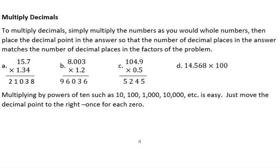Let's look at our examples and see if we can place the decimal points correctly. 15.7 times 1.34. If you were to multiply these numbers out without decimals, this is the answer you would get: 21,038.